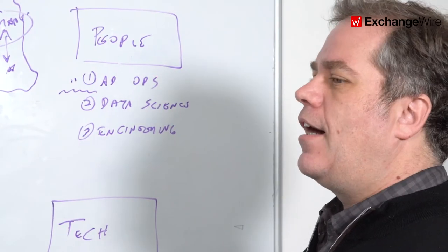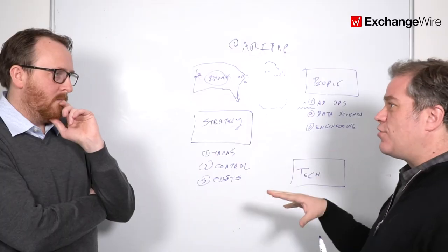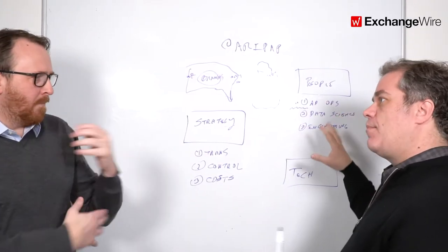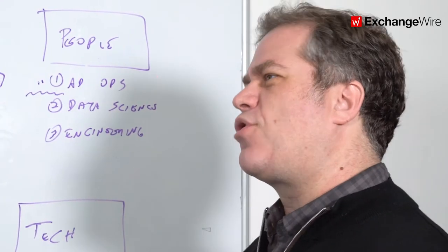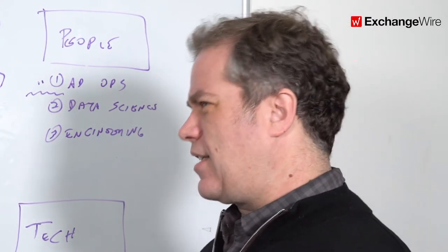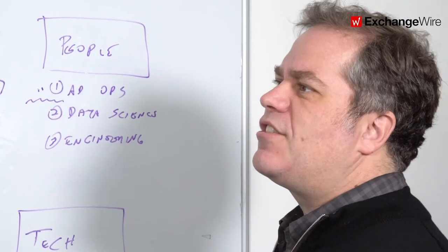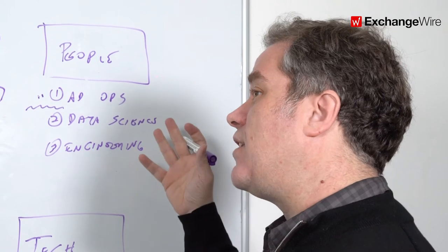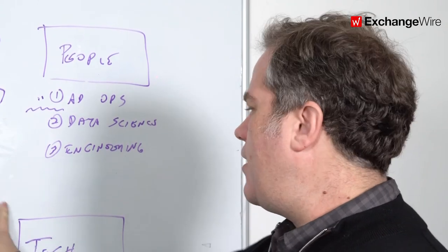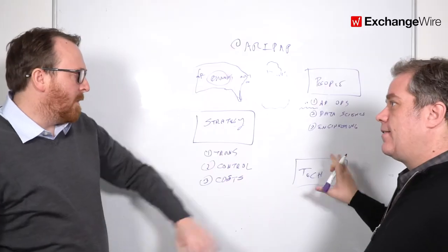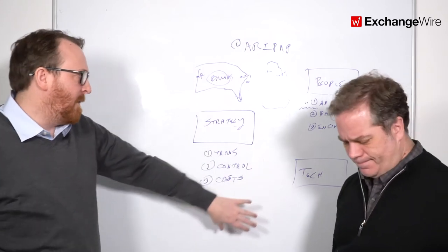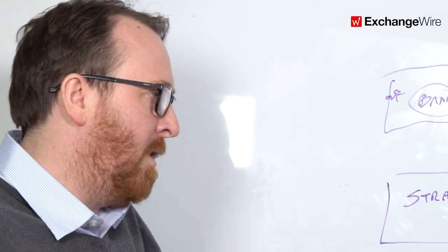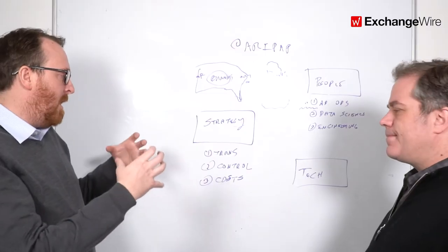Agencies are leaning into programmatic and are most well suited to bring a marketer along with the marketer choosing the tech. This is likely to be the model going forward in many ways for a lot of brands in Europe specifically. In Europe specifically talent is even harder to address than in the United States.